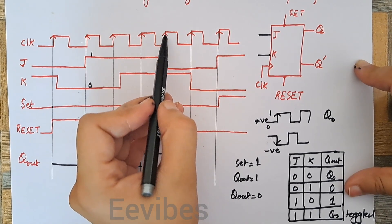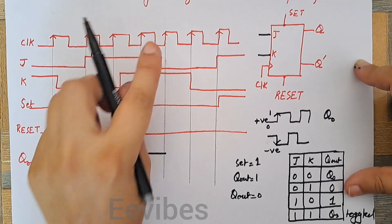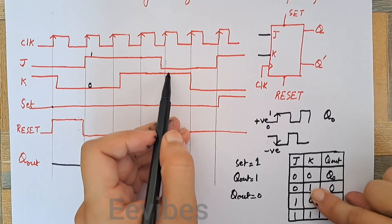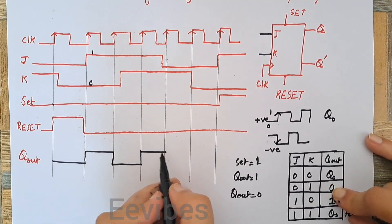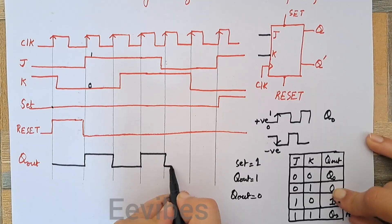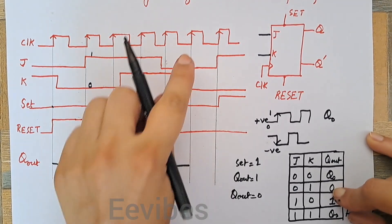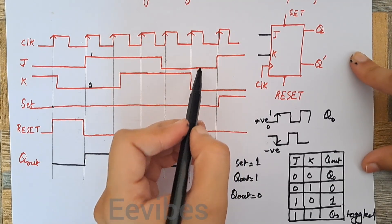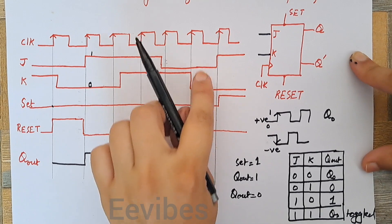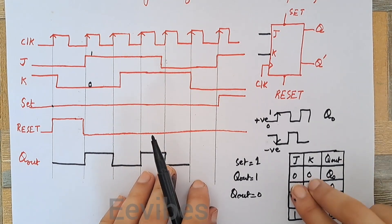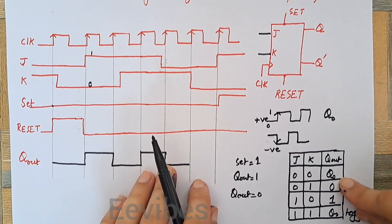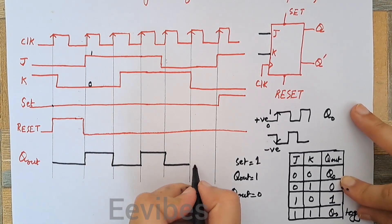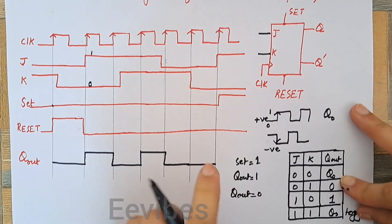When the next positive edge arrives, K becomes 1 while J is equal to 0. When K is 1 and J is 0, output is equal to 0, so the output switches to 0. For the next clock cycle, J and K are both equal to 0. When both inputs are 0, the flip-flop retains its state — it stays the same — so output remains 0.